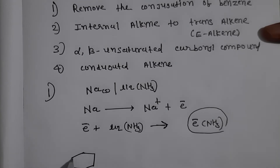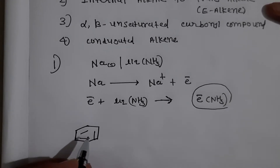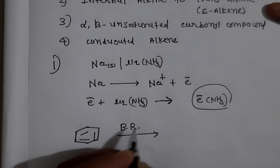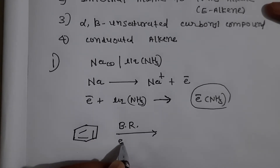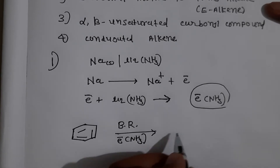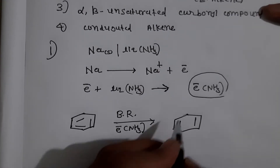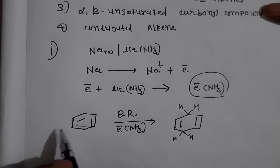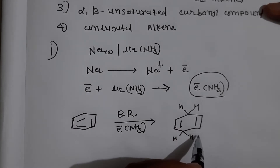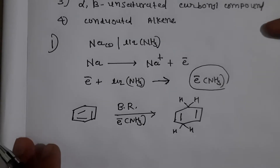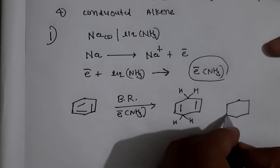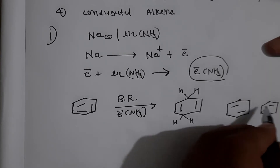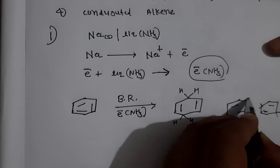If we reduce the benzene ring in the presence of Birch reduction, we get a 1,4-diene. One hydrogen is added here and one hydrogen is added here. In the reactant there are six hydrogens, but in the product there are eight hydrogens total, so the number of hydrogens increases — that means reduction occurs. Both hydrogens are added opposite to each other, meaning a 1,4-addition occurs.